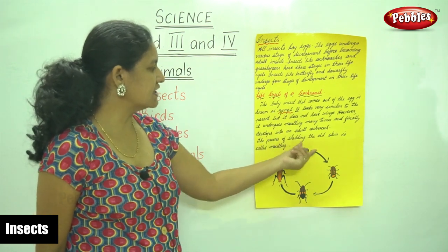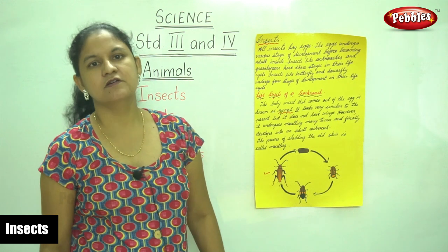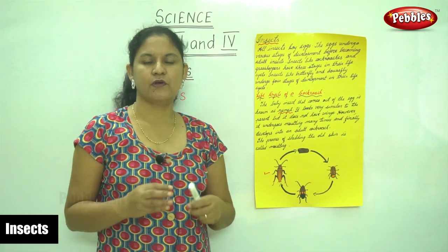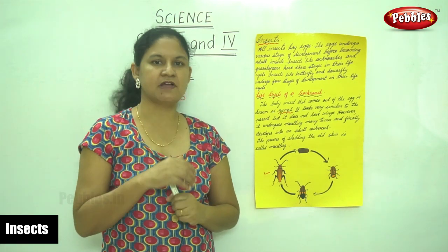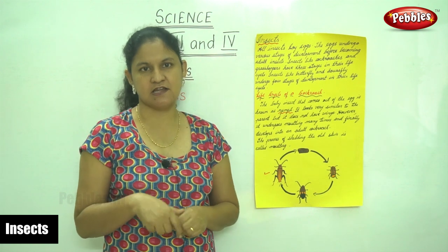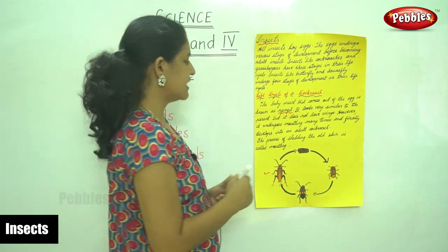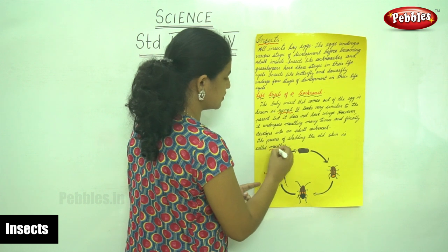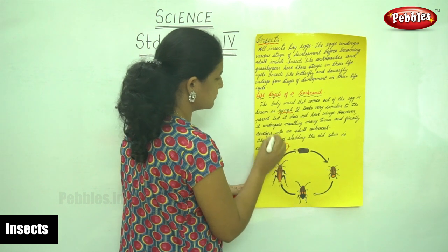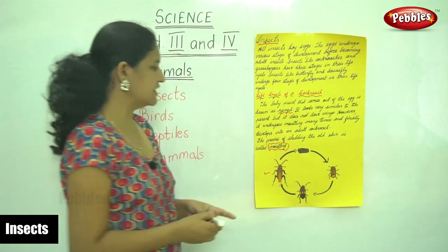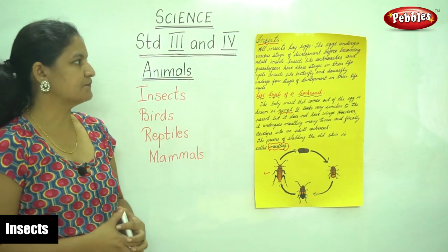The process of shedding the old skin is called molting. When an insect grows to become an adult, it sheds its skin, and this process of shedding the old skin is known as molting.